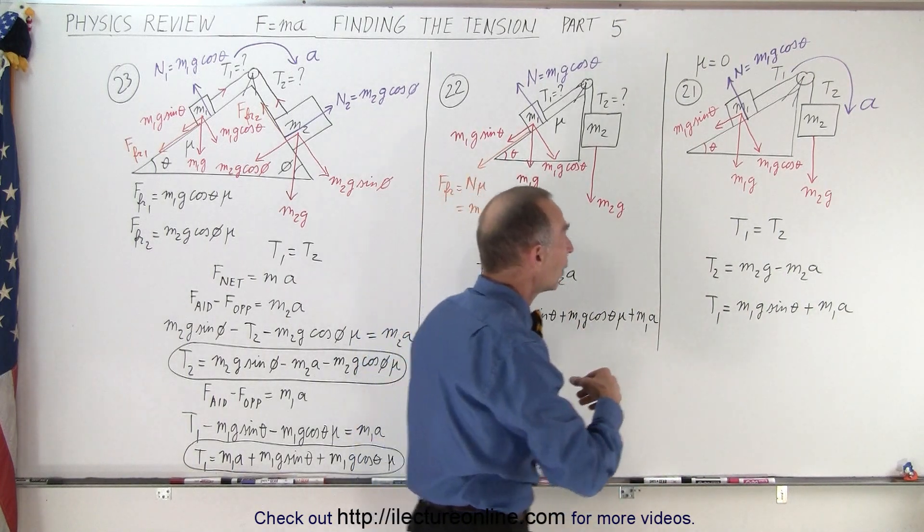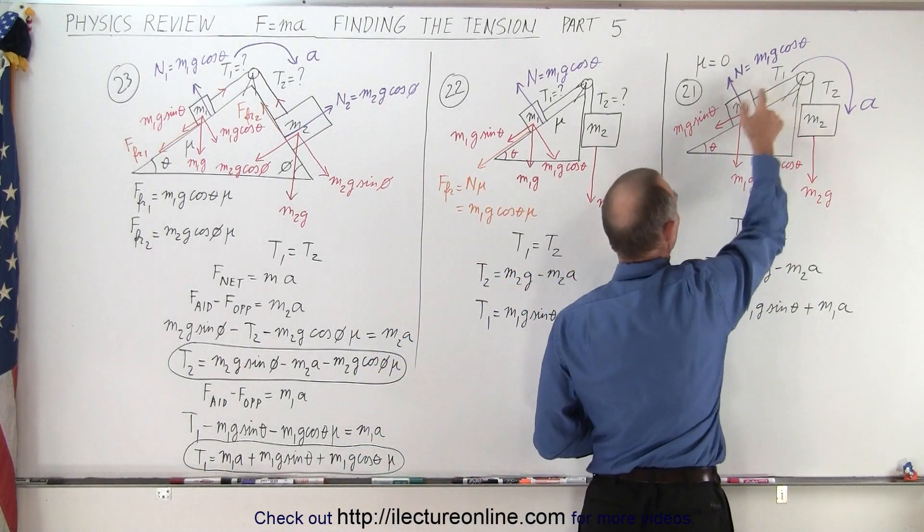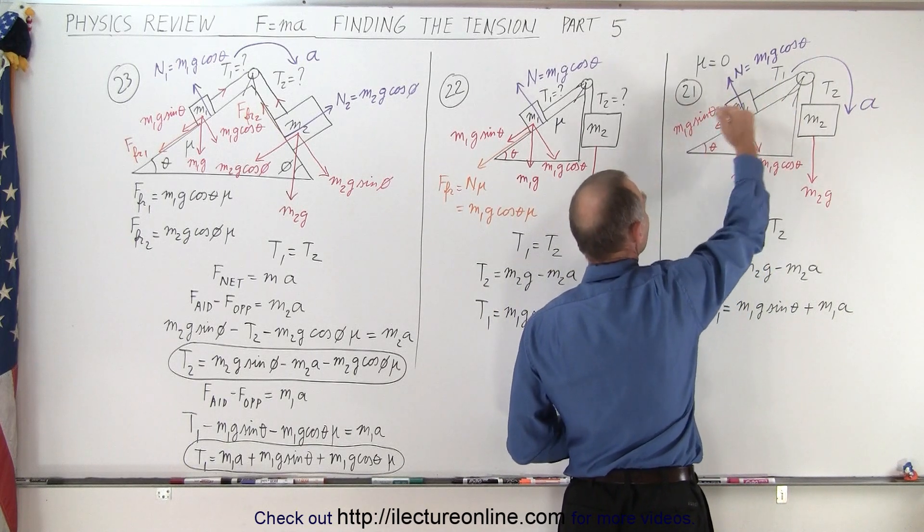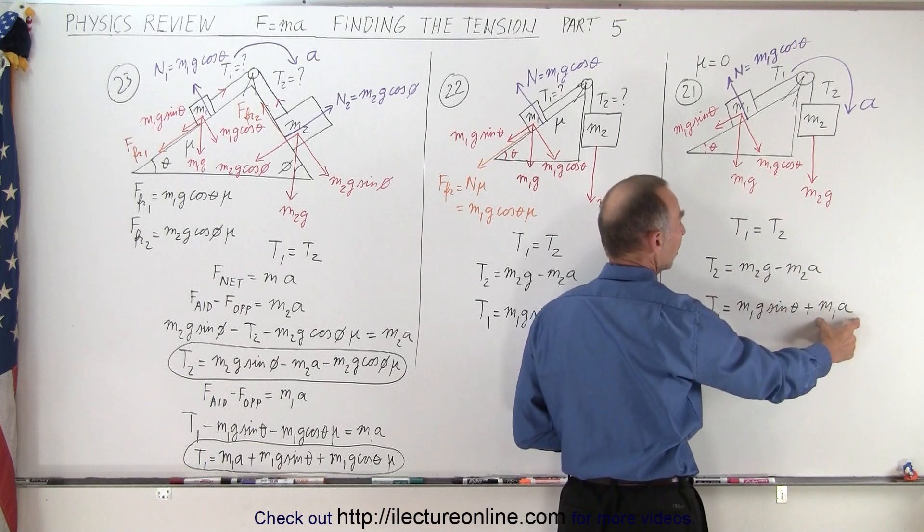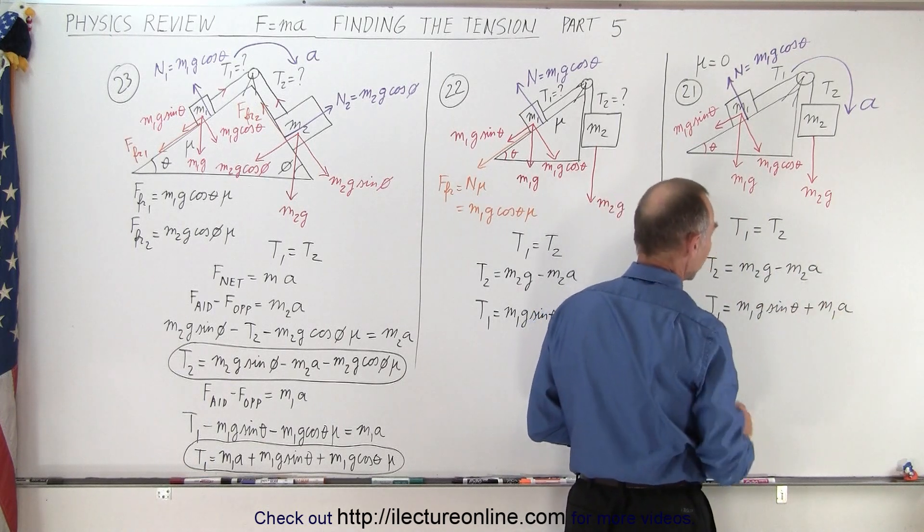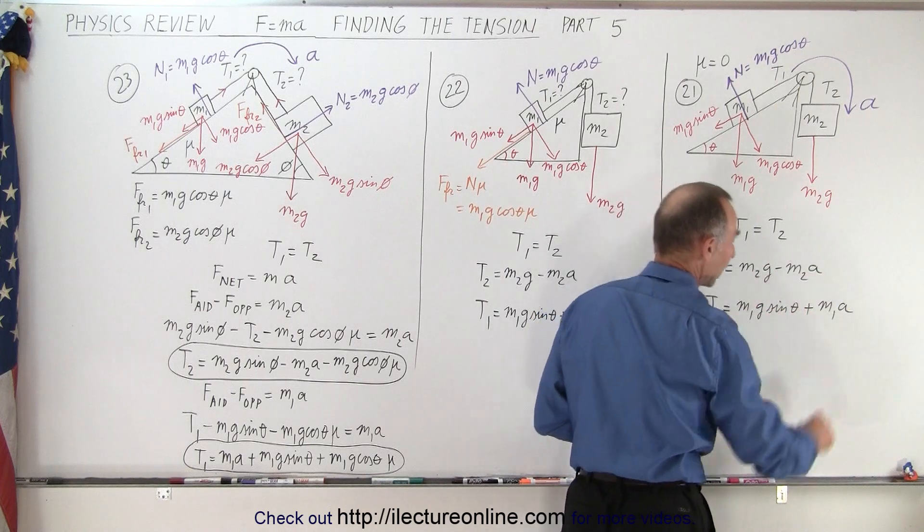On the other side, T1 can be found by saying that T1 must be equal to the component of the weight along the incline, which is M1G sine theta, plus the force required to accelerate M1, which is M1A. Notice again that they will be equal to each other, so this is equal to that.